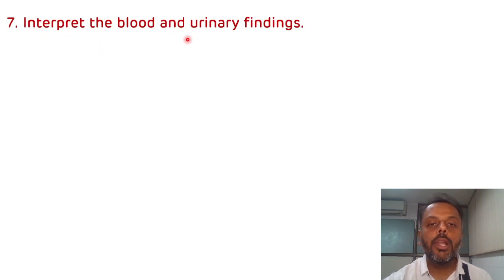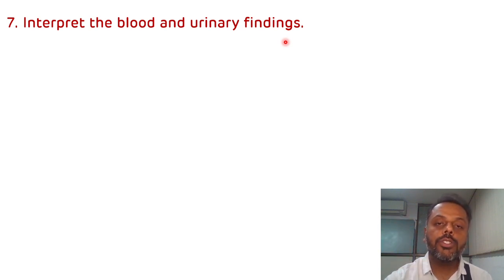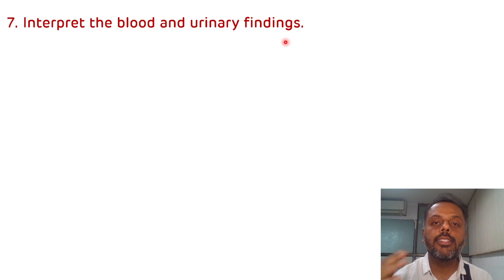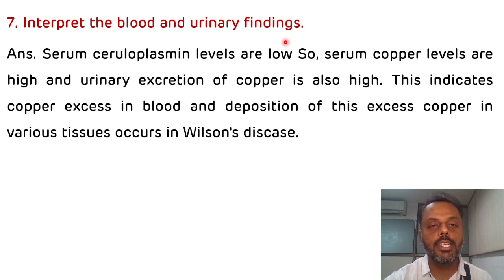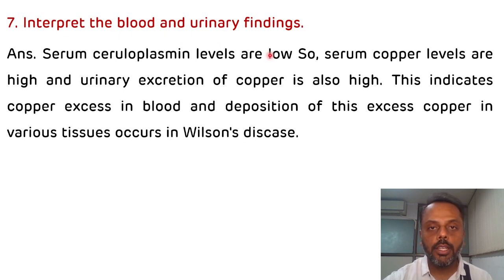To interpret the blood and urinary findings: there is an increased level of copper in the blood, increased excretion of copper in the urine, and a reduction of ceruloplasmin level. This gives an indirect indication that there is increased copper in Wilson's disease, which results in increased deposition of copper in various tissues including the liver and brain.